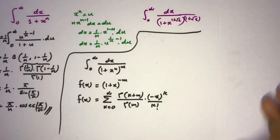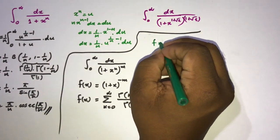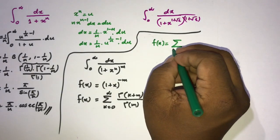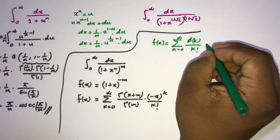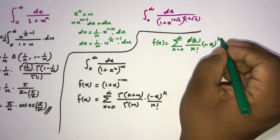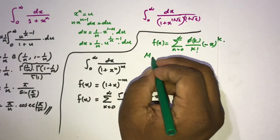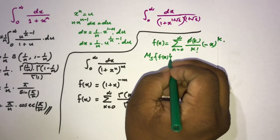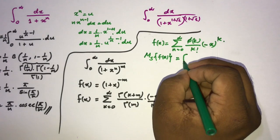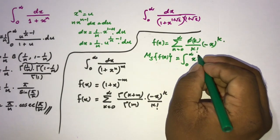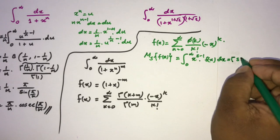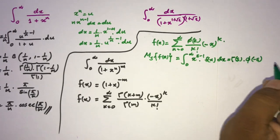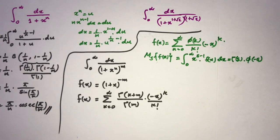Ramanujan's Master Theorem states: if f(x) can be written as the series sum from k = 0 to infinity of φ(k)/k! · (-x)^k, then the Mellin transform of f(x) — defined as the integral from 0 to infinity of x^(s-1) f(x) dx — equals Γ(s) · φ(-s).